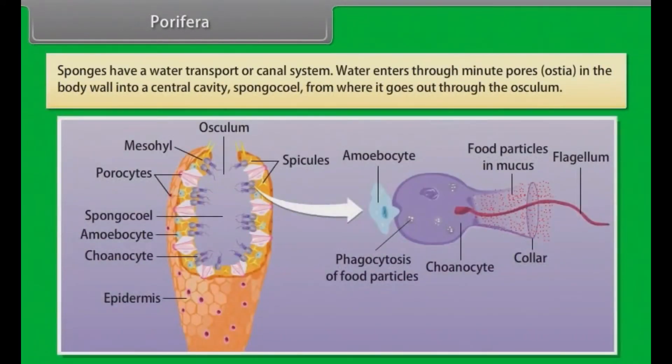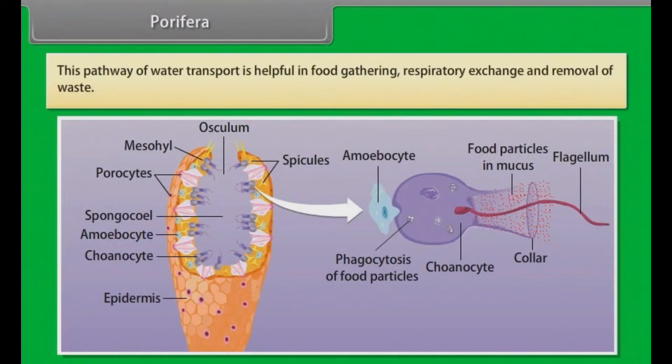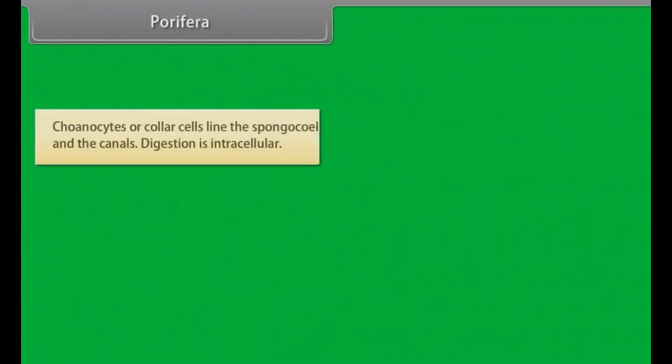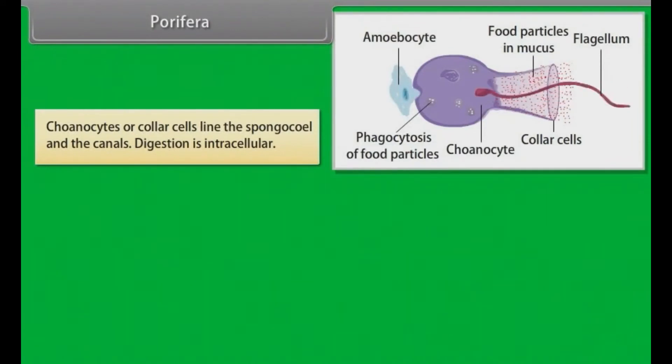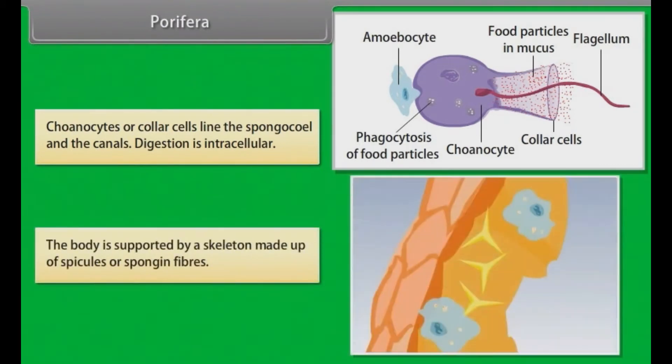Sponges have a water transport or canal system. Water enters through minute pores, known as ostia, in the body wall into a central cavity, spongocoel, from where it goes out through the osculum. This pathway of water transport is helpful in food gathering, respiratory exchange and removal of waste. Choanocytes or collar cells line the spongocoel and the canals. Digestion is intracellular. The body is supported by a skeleton made up of spicules and spongin fibers.